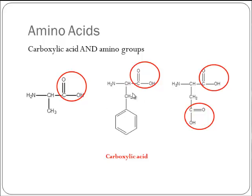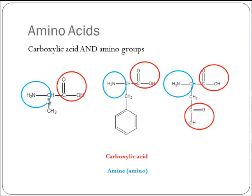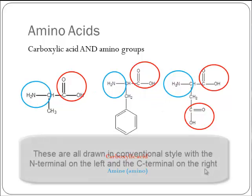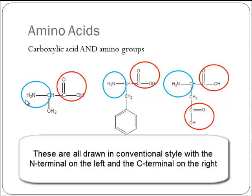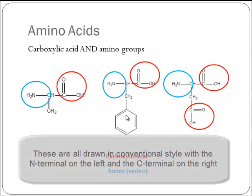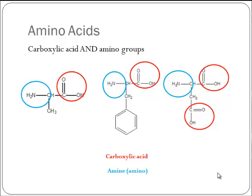The other side groups are hydrocarbon side groups without an acid group. So we have carboxylic acids in each of these amino acids. The amino group is an amine — an N connected to three things, at least one of which is a carbon. There they are: N, C, and two H's. These are also all drawn conventionally with the N terminal to the left, the C terminal to the right, and the side group pointing down.